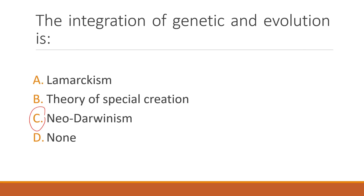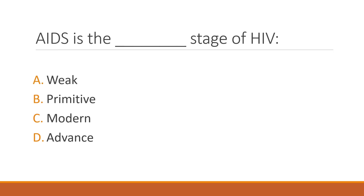When AIDS is the dash stage of HIV, what stage is it? AIDS is basically an advanced stage of HIV, so the correct answer is option D.